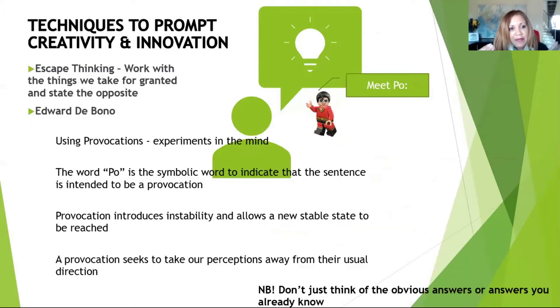This one, escape thinking. Edward de Bono says work with the things that you take for granted and state it in the opposite way. So we call it provocations. And the provocation is an experiment that happens in the mind. And I've got a little man there and his name is Poe. And this all comes from Edward de Bono's book around creative thinking. The word Poe is the symbolic word to indicate that the sentence is intended to be a provocation.